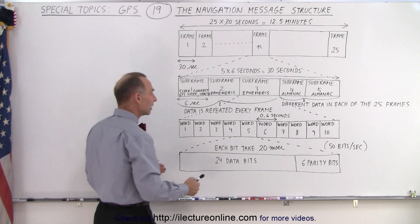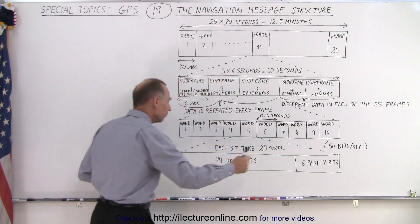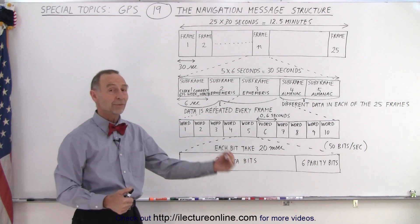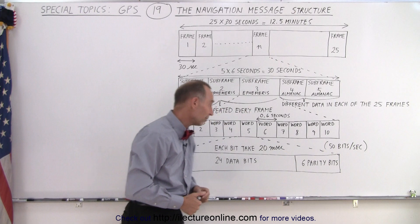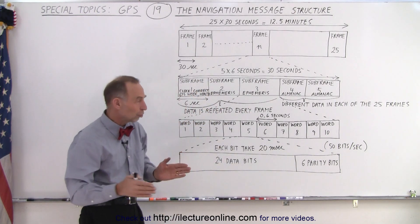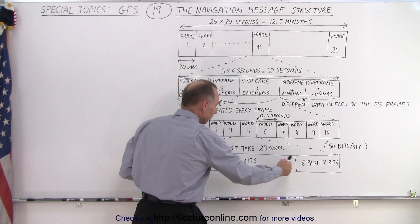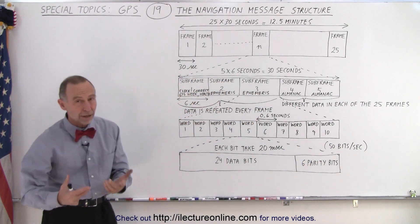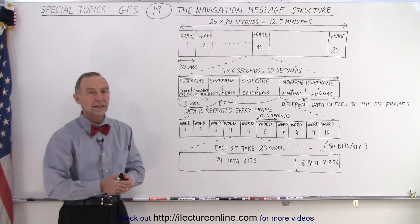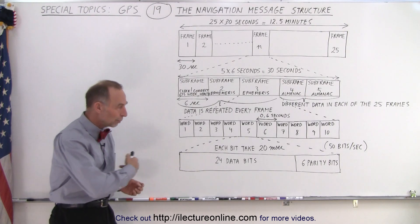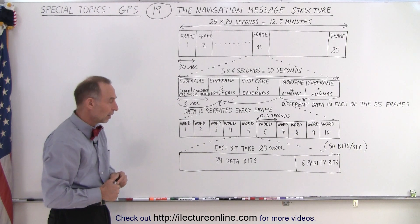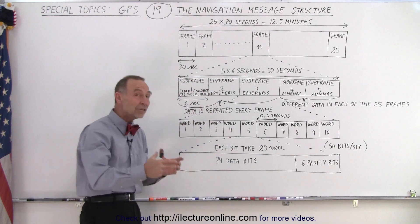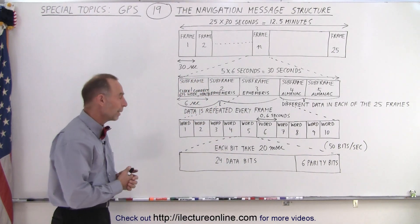And then we realize that each of the words contains a total of 30 bits. Now, it takes each bit 20 milliseconds to be sent. That means we have a bit rate of 50 bits per second. And typically, the structure of a word is that the first 24 bits are data bits, and the last six bits are parity bits. And parity bits are used to check the accuracy of the data. If it somehow got messed up, we'll be able to tell by checking the parity bits. So, the useful data is usually contained in the first 24 and then the last six bits are used for parity.